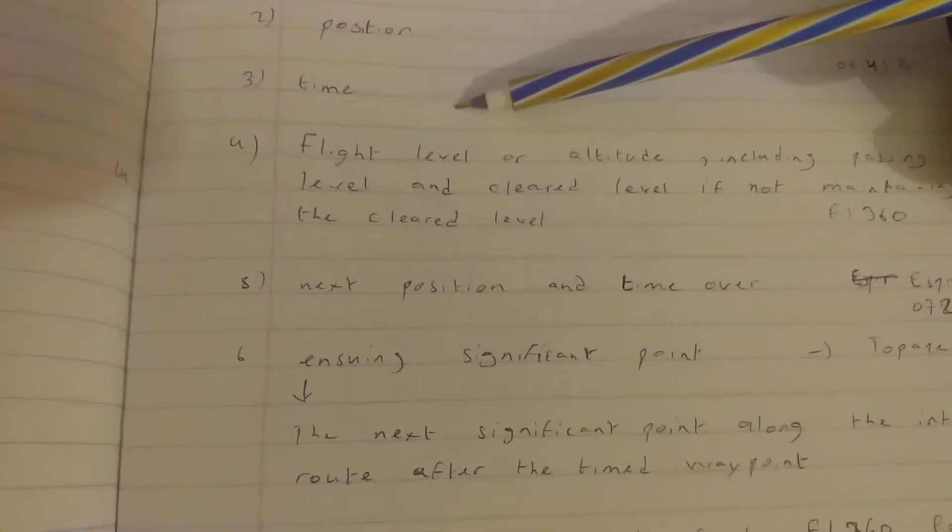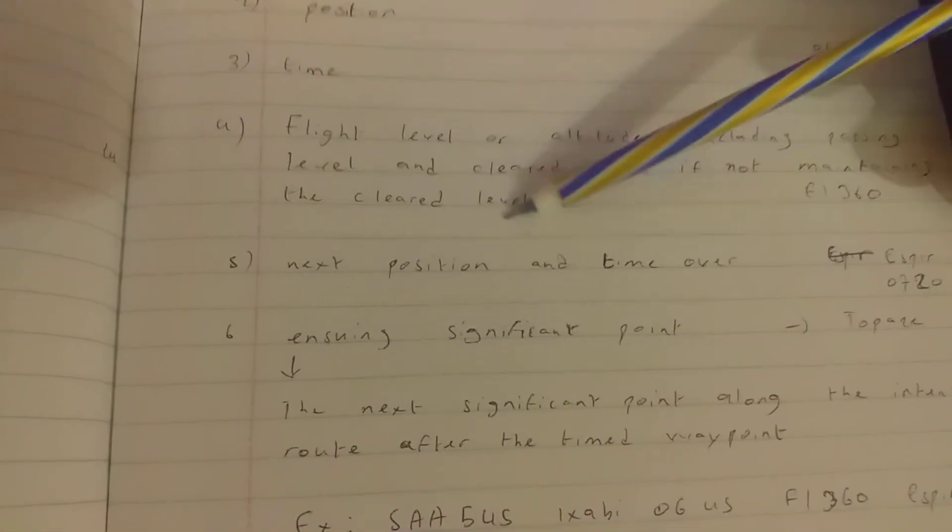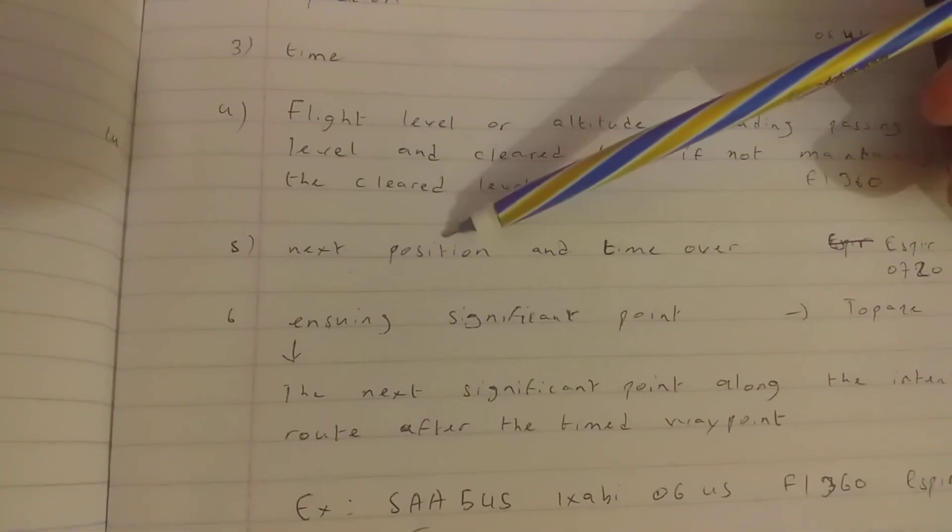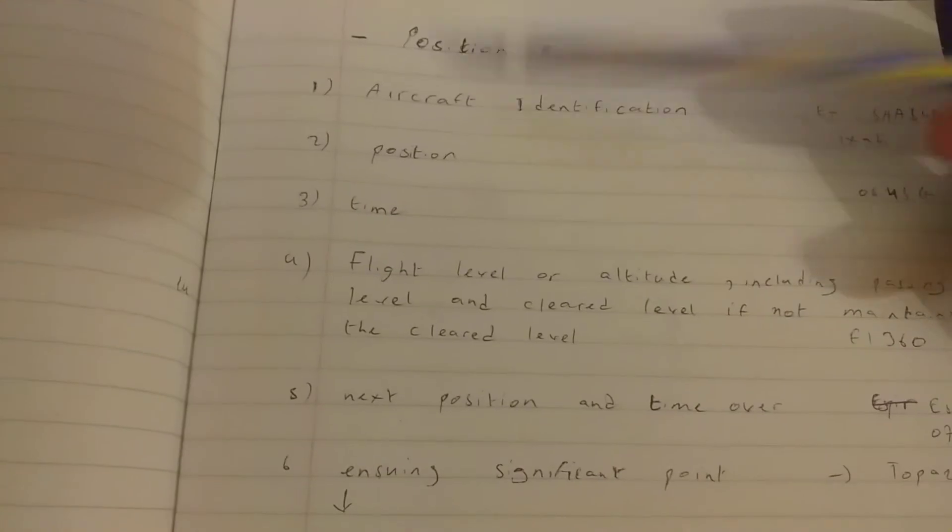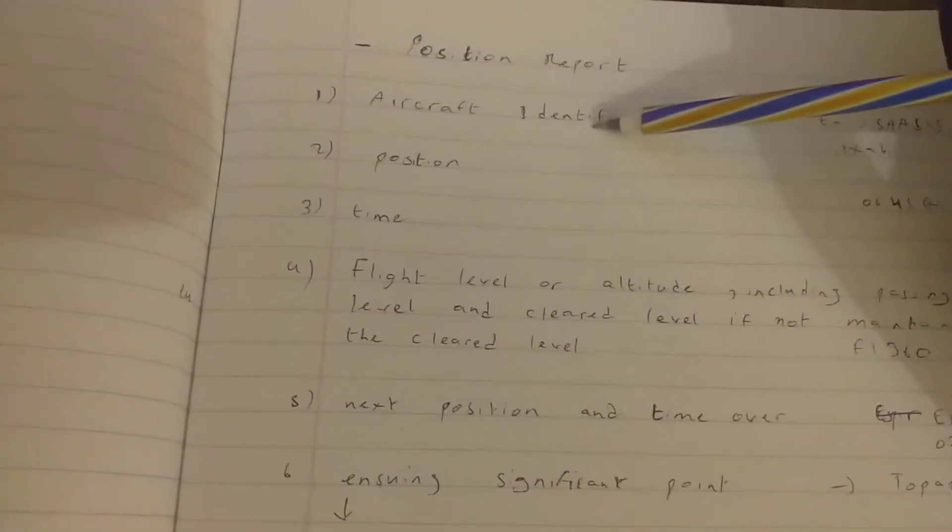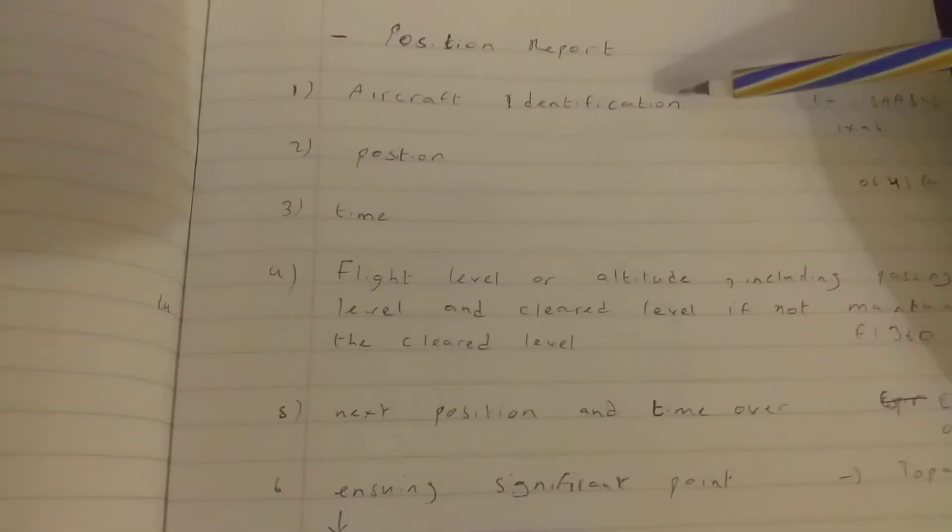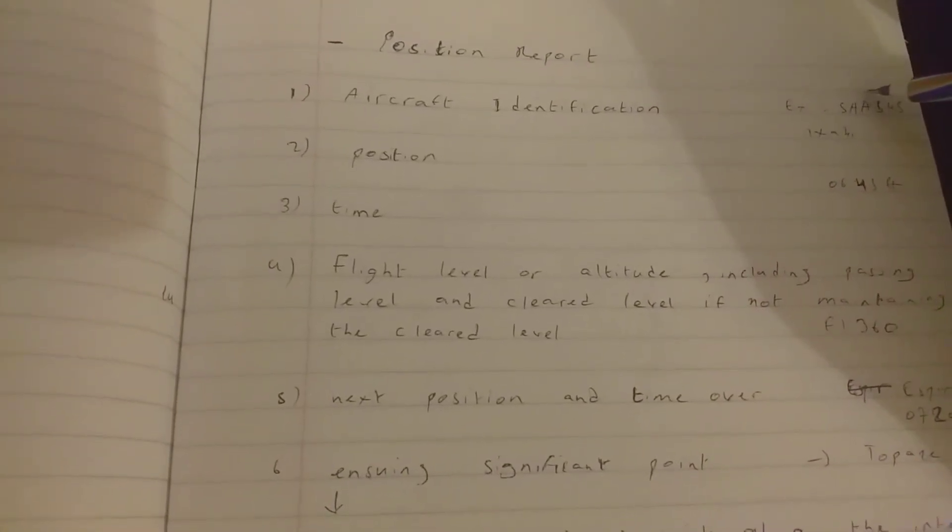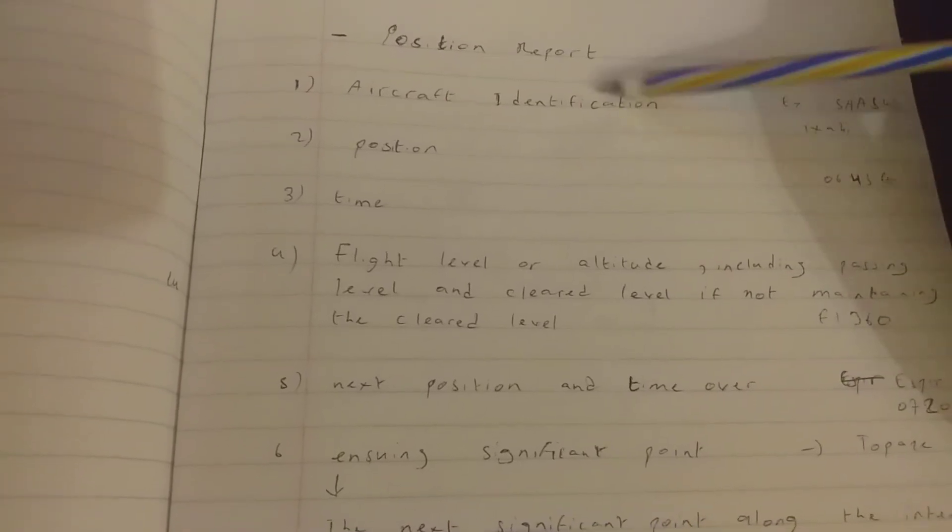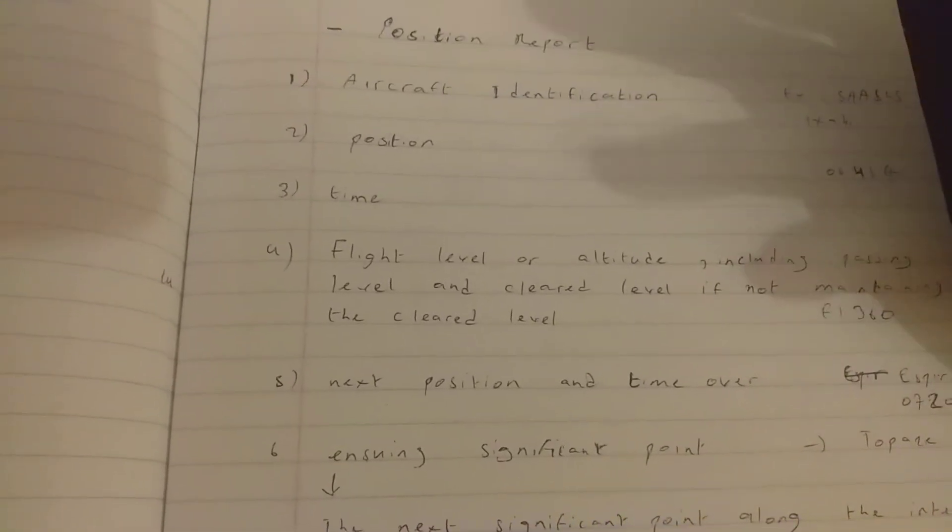The fifth is next position and time over, and the sixth is the ensuing significant point. So the first one, if we take the aircraft identification, is usually the call sign, for example Springbok 545. Let's say it's at any position.